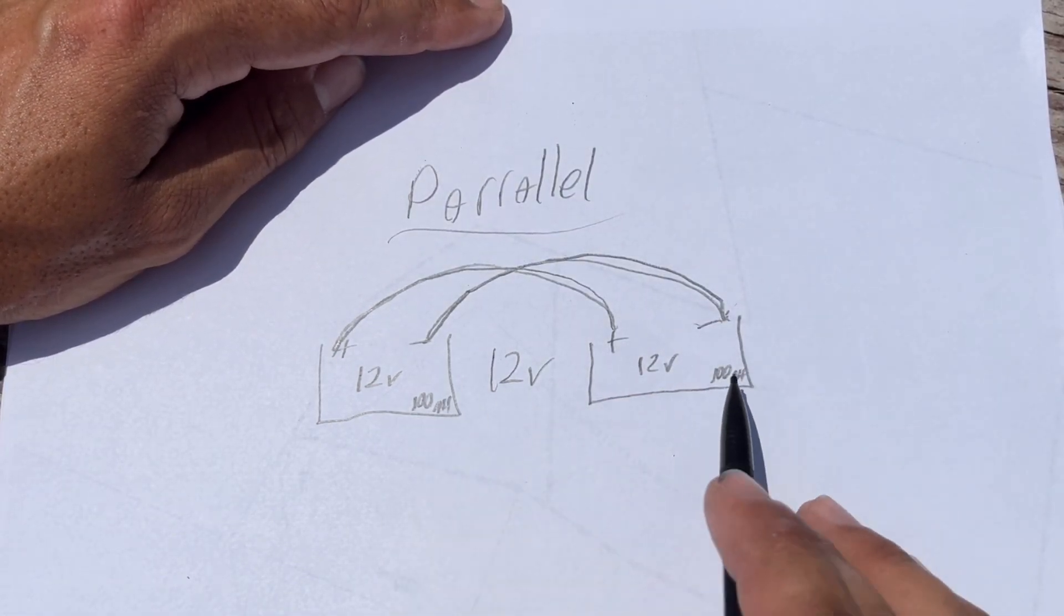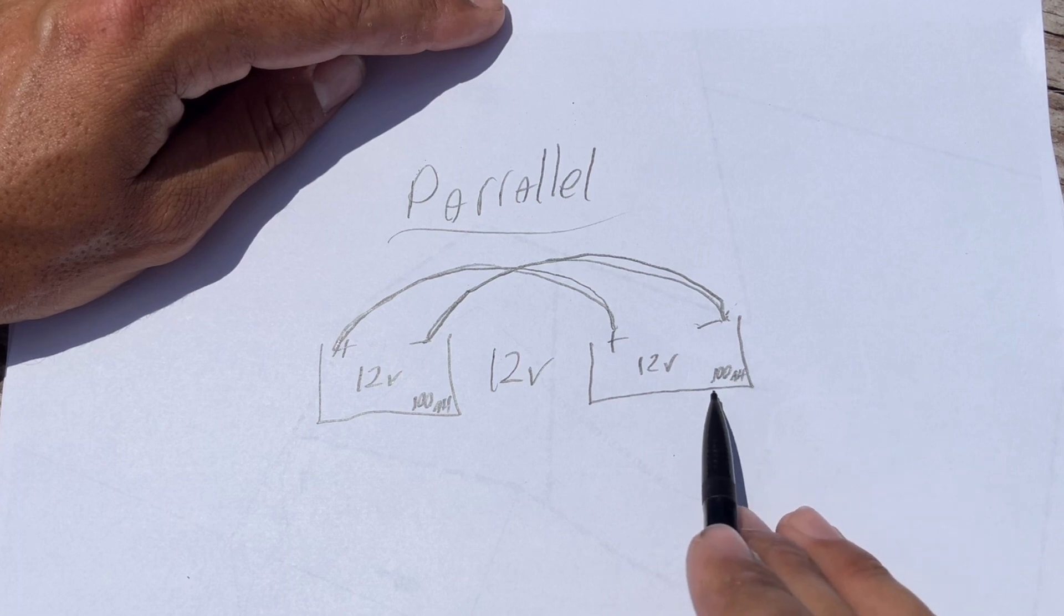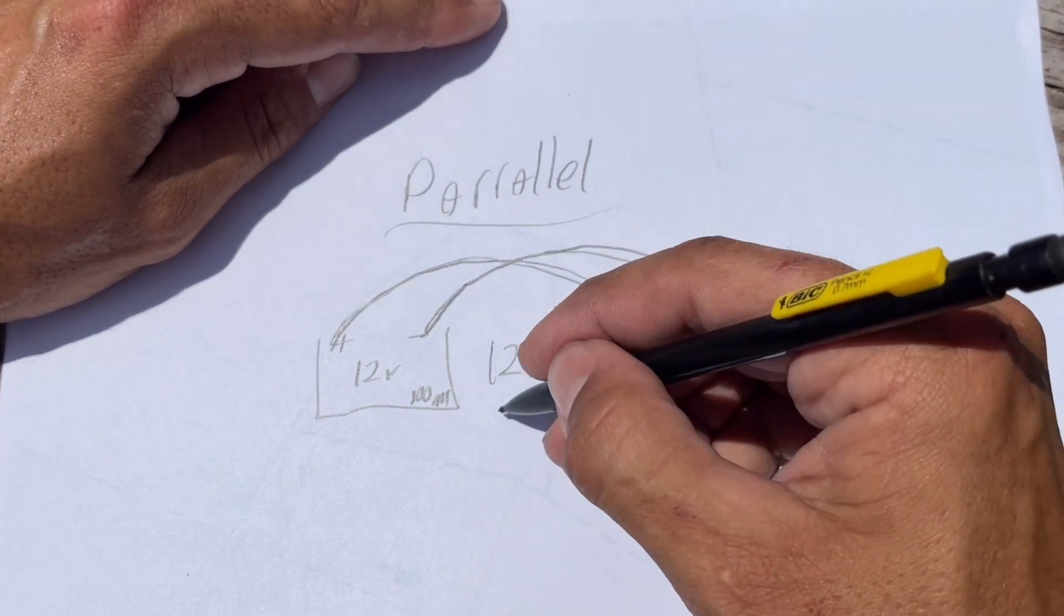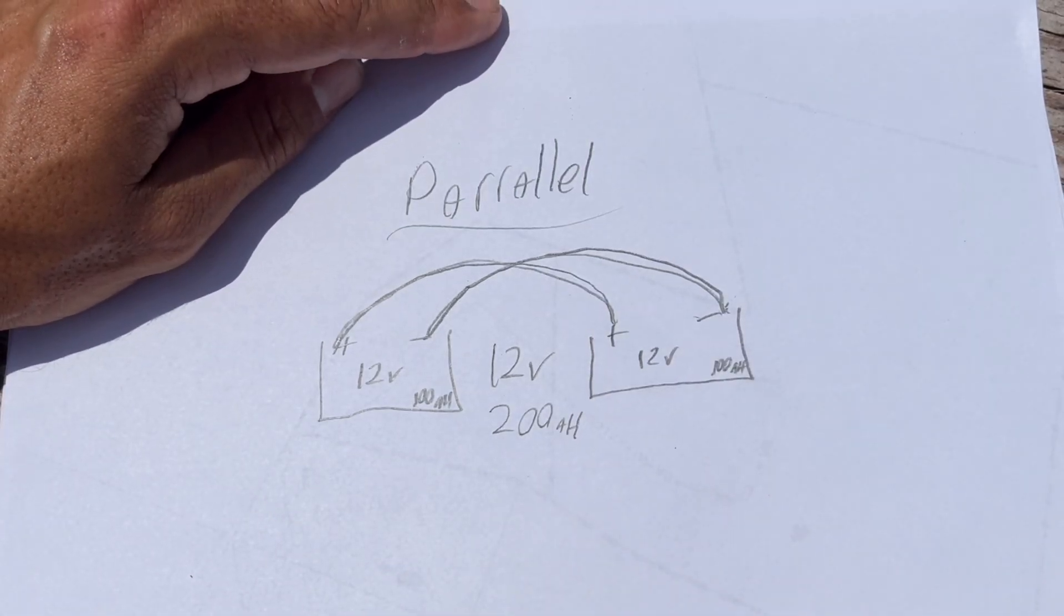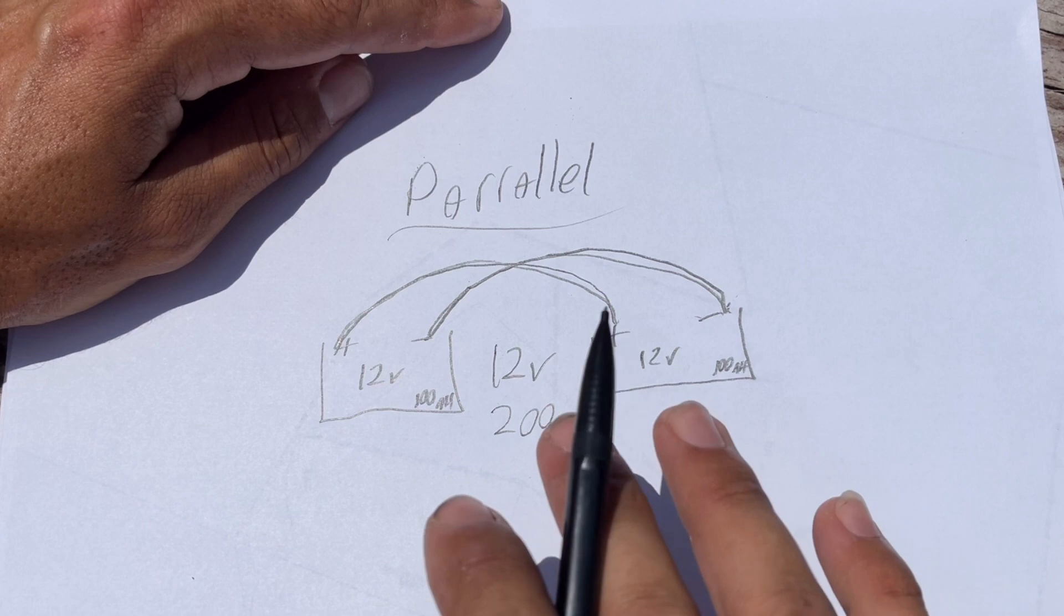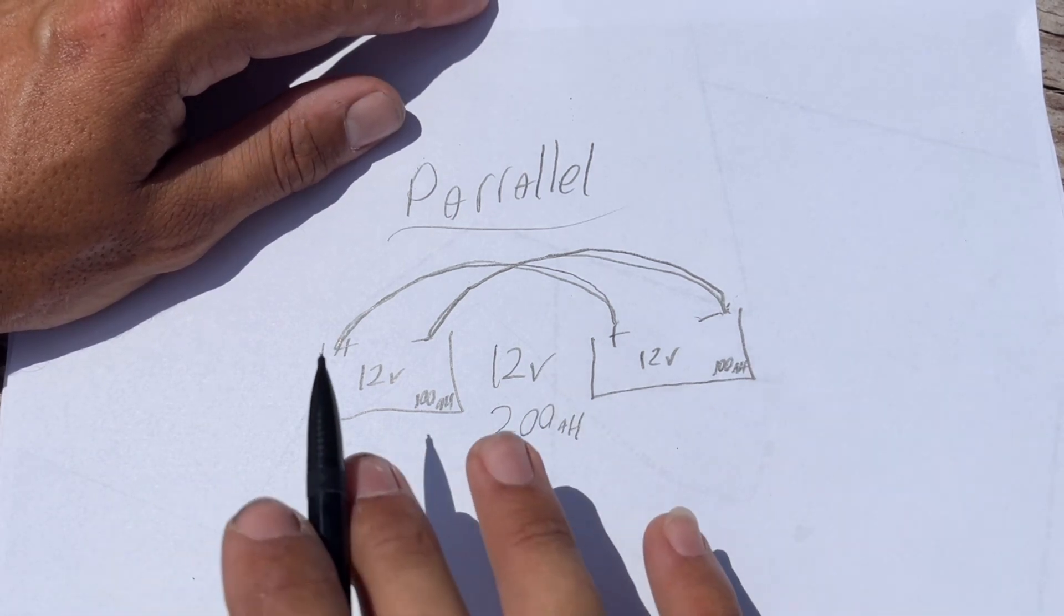Now, what happens to the amperage? Well, now you've actually doubled your amperage. So now you have a 12-volt 200-amp-hour battery, and that's exactly what you've done.